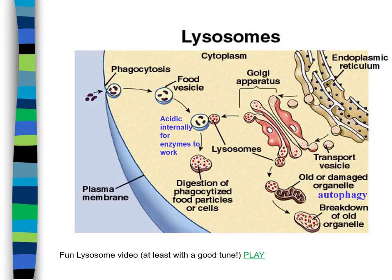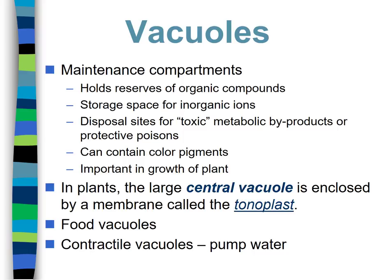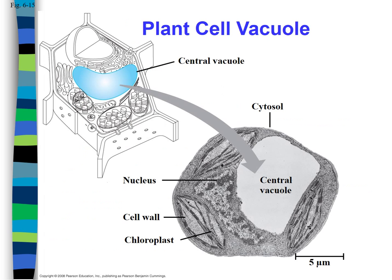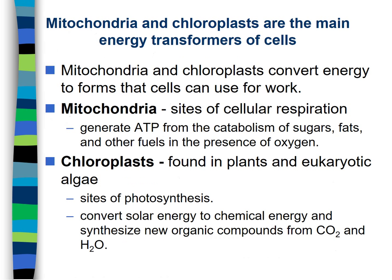Lysosomes fuse with food vesicles to break down food inside a digestive vacuole, and also fuse with older damaged organelles to recycle their parts. Vacuoles play a diverse set of roles — holding food, pumping water, holding pigments, and more. In plants the large central vacuole is especially important, keeping the plant cell turgid — meaning high internal pressure keeps the cell walls apart, making the plant erect and strong.